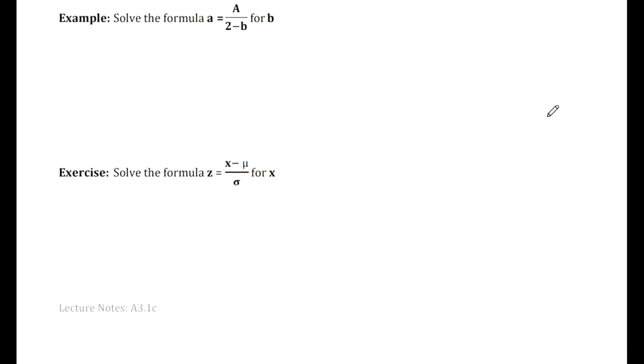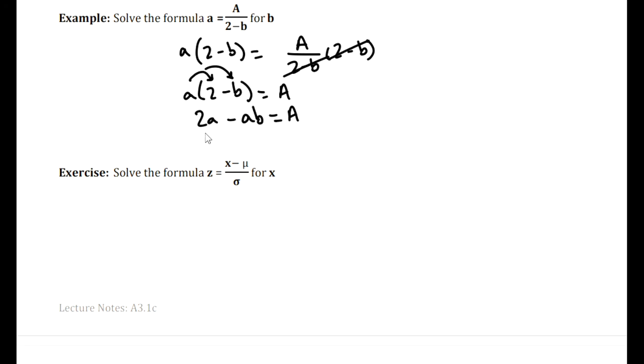Two more formulas where we solve for a particular letter in the formula. So if we want to solve for b, we need to get b out of the denominator. We're going to multiply both sides by the least common denominator. So we have a times (2 minus b), a over (2 minus b) times (2 minus b). That's going to cancel the (2 minus b) on the right. So we have a(2 minus b) equaling capital A. b is still inside the parentheses here, so we're going to break that up by distributing. So we have 2a minus ab equals A. So then we'll move the 2a over.